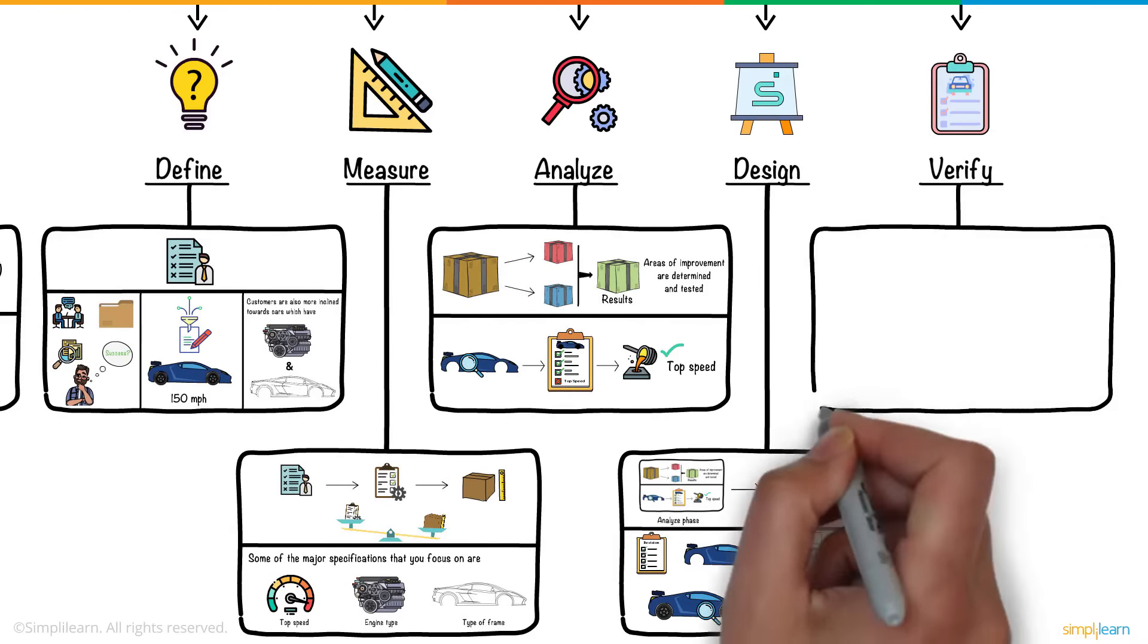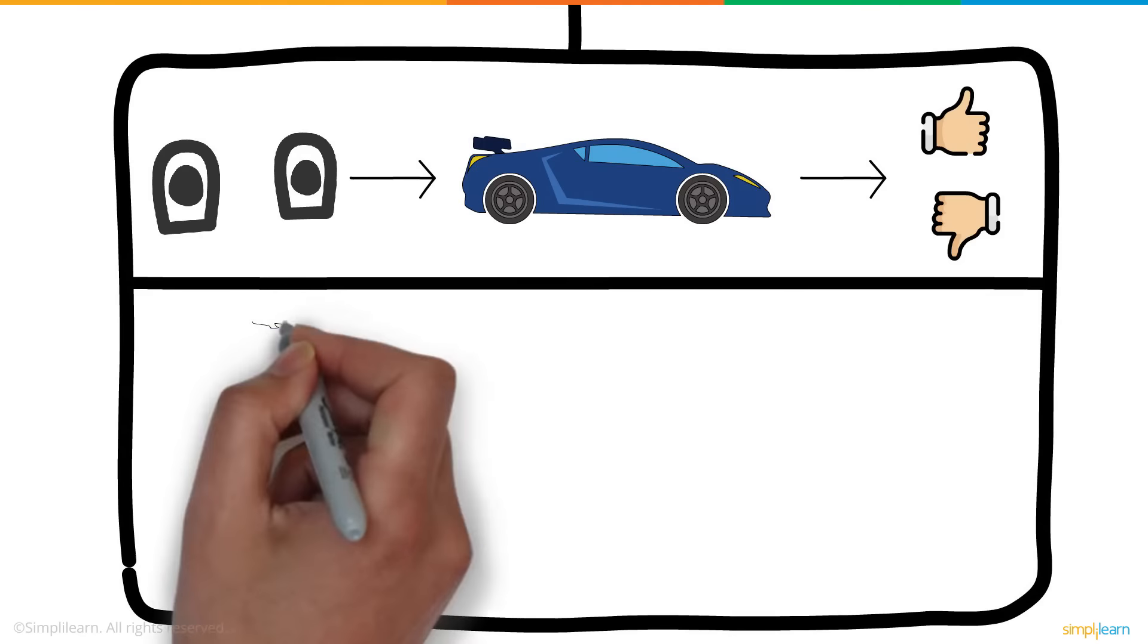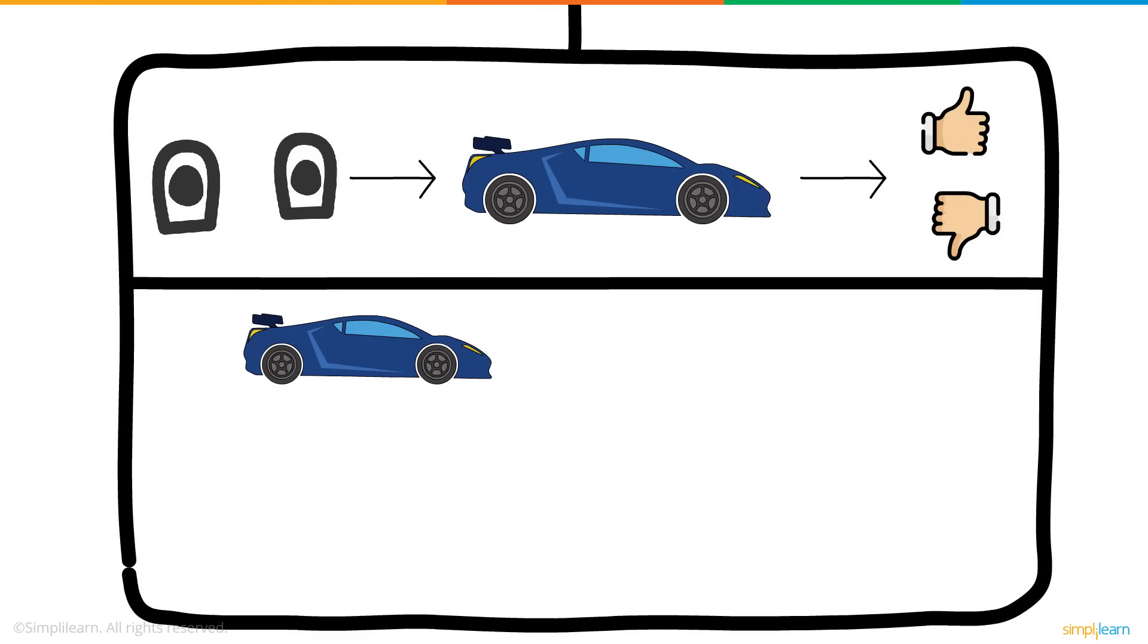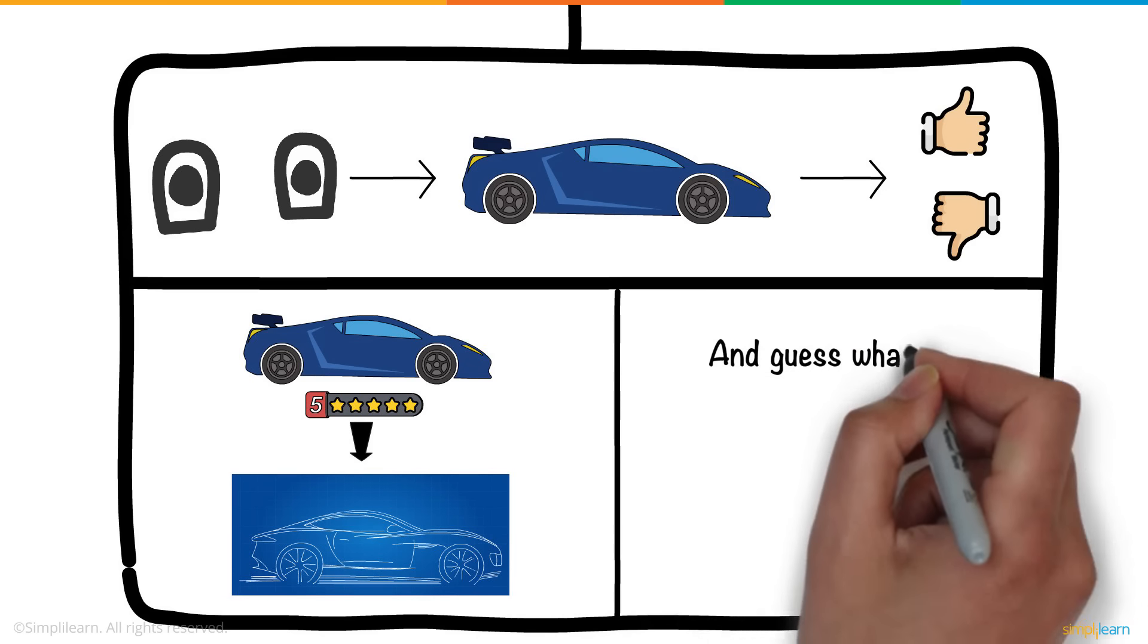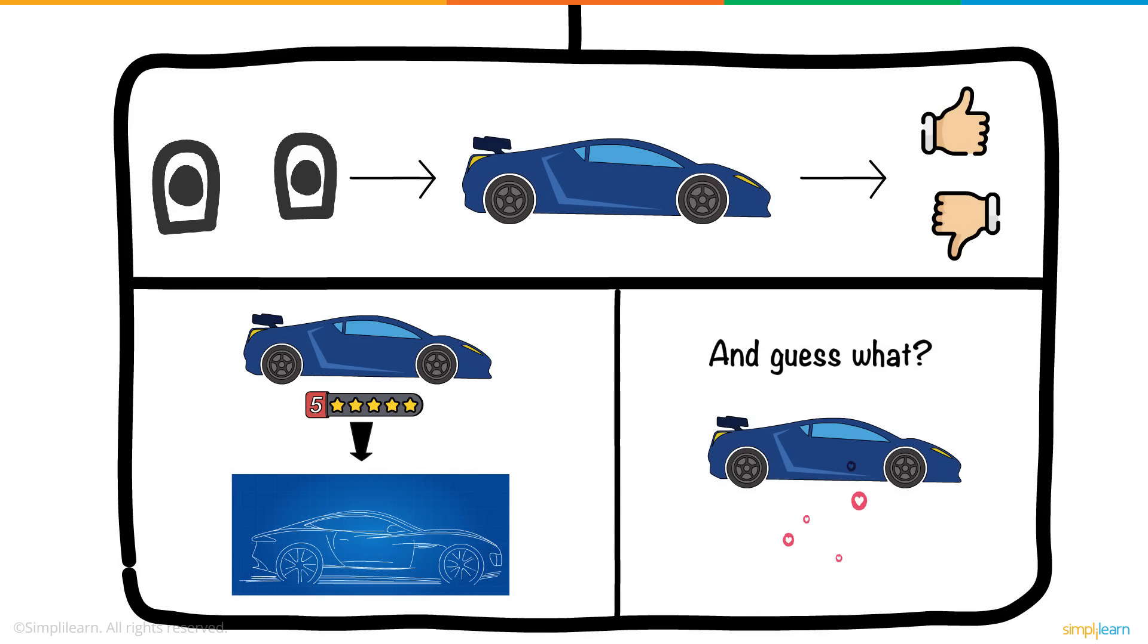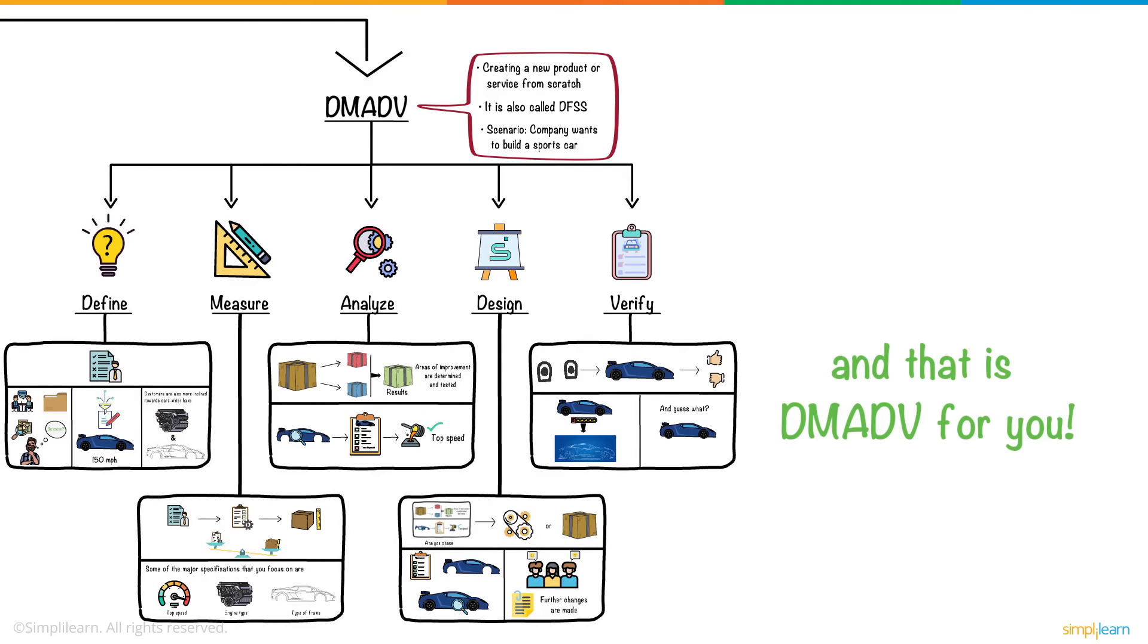And finally, in the Verify phase, you check whether the end result meets or exceeds customer requirements. Once you launch your brand new sports car, you collect customer feedback and incorporate it into future designs. And guess what? Your customers are loving the new design. And that is DMADV for you.